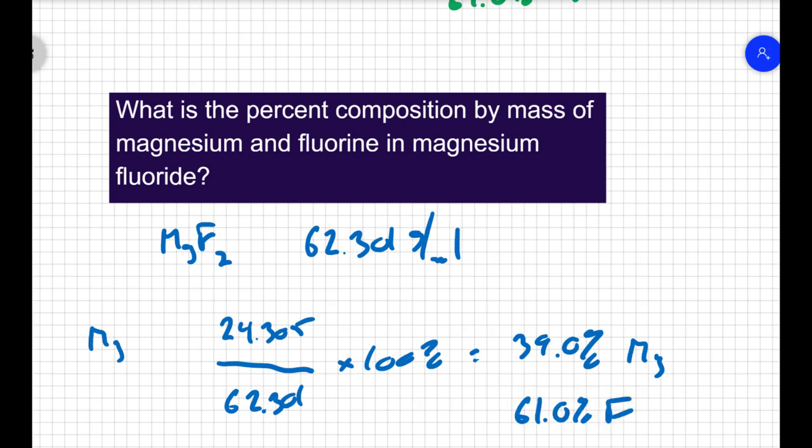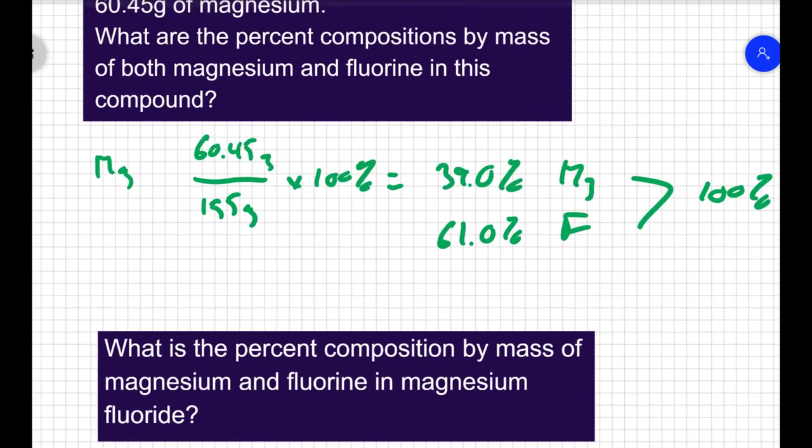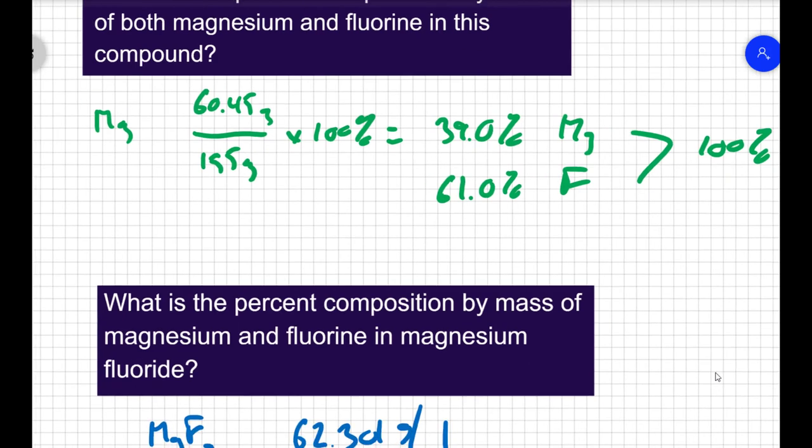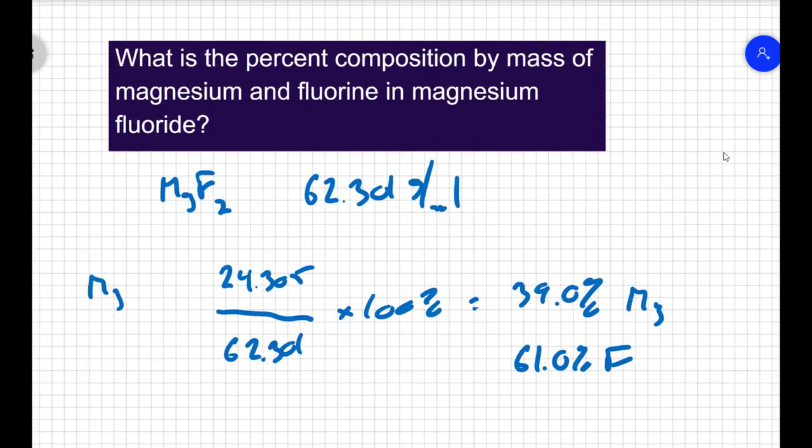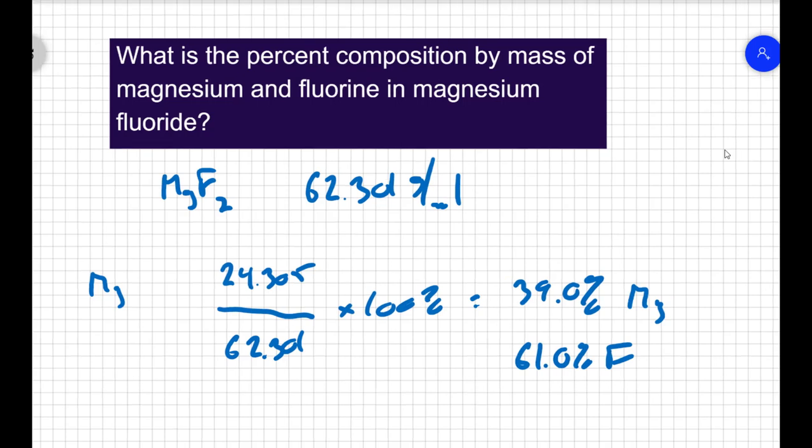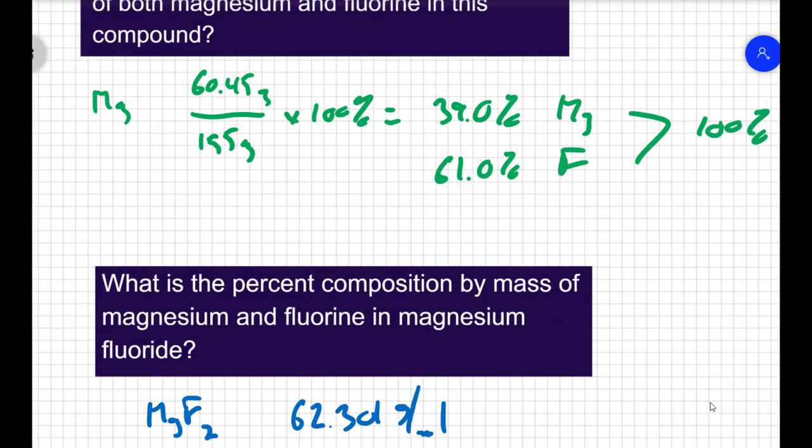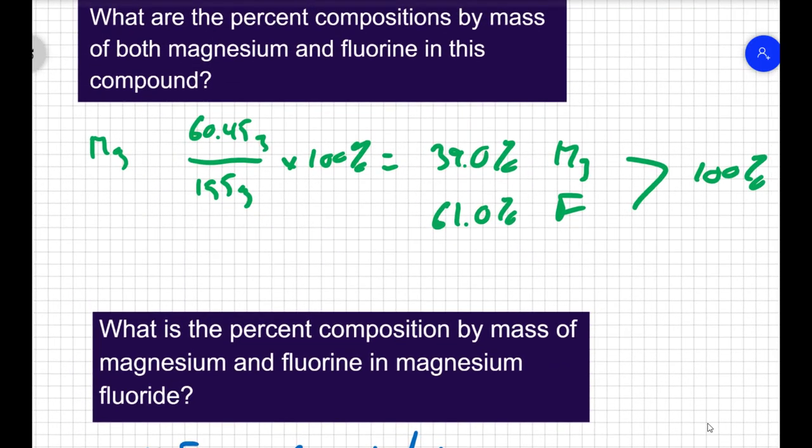Now these numbers should look familiar to us, because these are the exact same percentages we got in the previous problem. That means that these two compounds are the same compound. They have the exact same percent composition, so by law of definite proportions, I know that the magnesium fluoride here is the same magnesium and fluorine compound here.